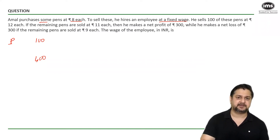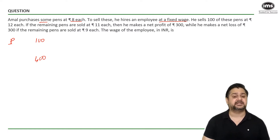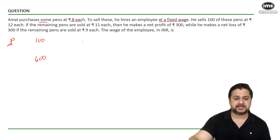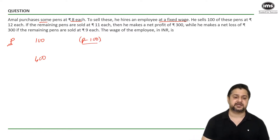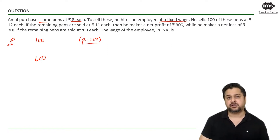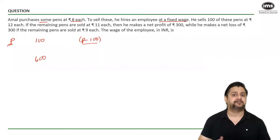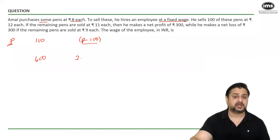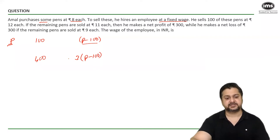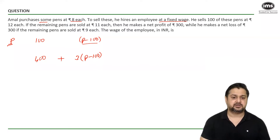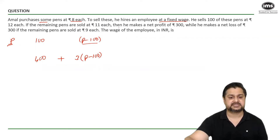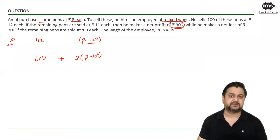Now there's a conditional statement. If the remaining pens are sold at ₹11 each — remember total pens bought is p, 100 pens already accounted for, so remaining pens are p minus 100. My cost is ₹8 and selling price is ₹11, so I make ₹3 profit per pen. Total profit from these pens is 3 × (p − 100). Combined with the ₹400, he makes a net profit of ₹300.